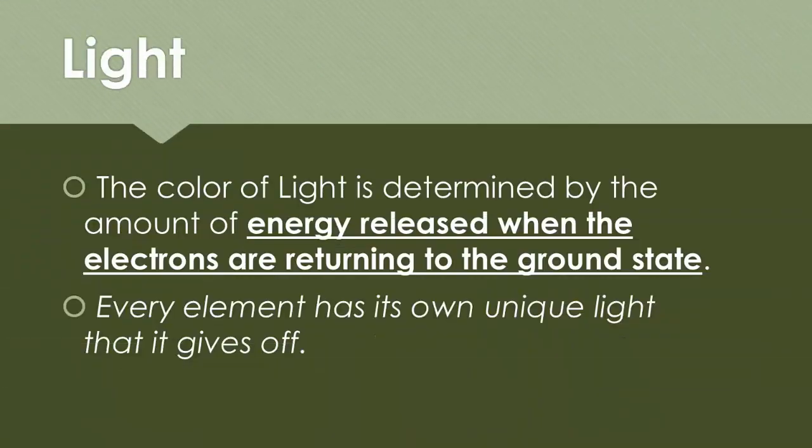Light, or the color of light, is determined by the amount of energy released when the electrons are returning to the ground state. Therefore, every element has its own unique light that it gives off because every element has unique amounts of electrons.